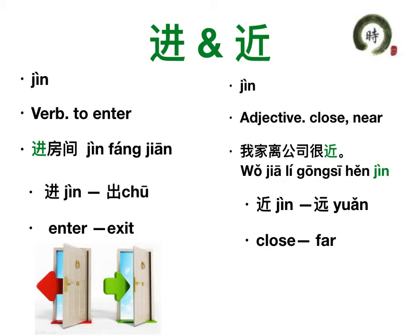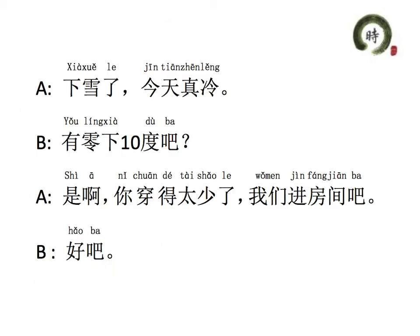Now let's read the dialogue together. 下雪了，今天真冷。有零下十度吧。是啊。你穿得太少了。我们进房间吧。好吧。OK, one more time: 下雪了，今天真冷。有零下十度吧。是啊。你穿得太少了。我们进房间吧。好吧。